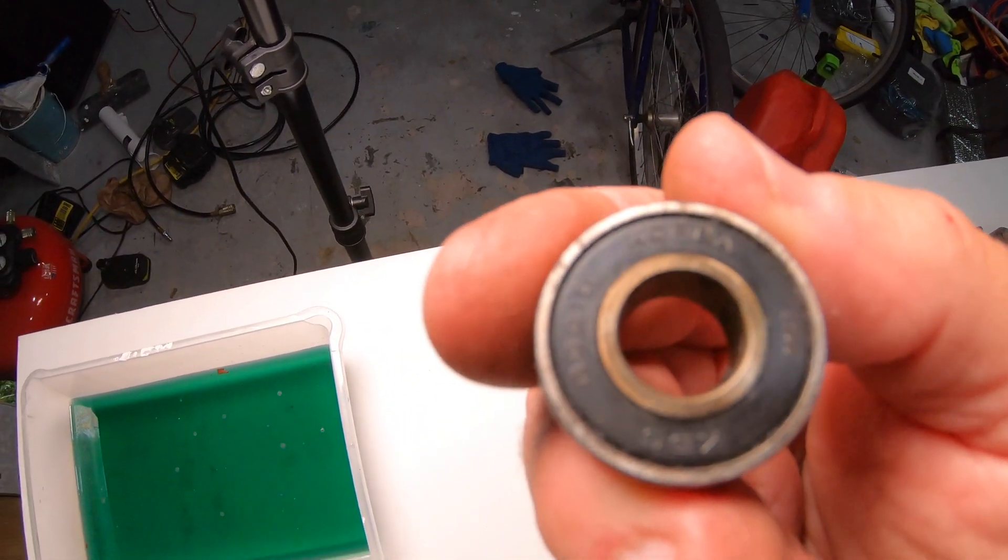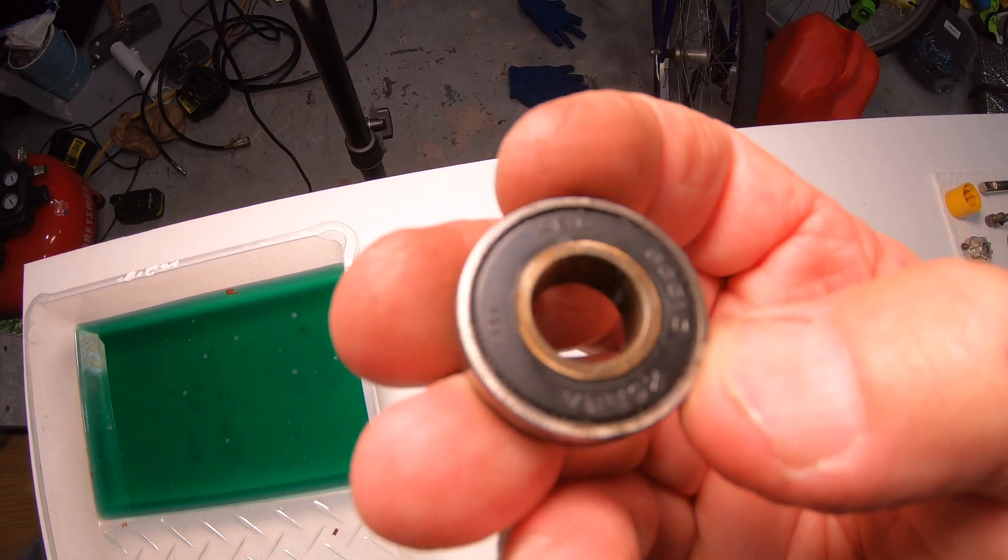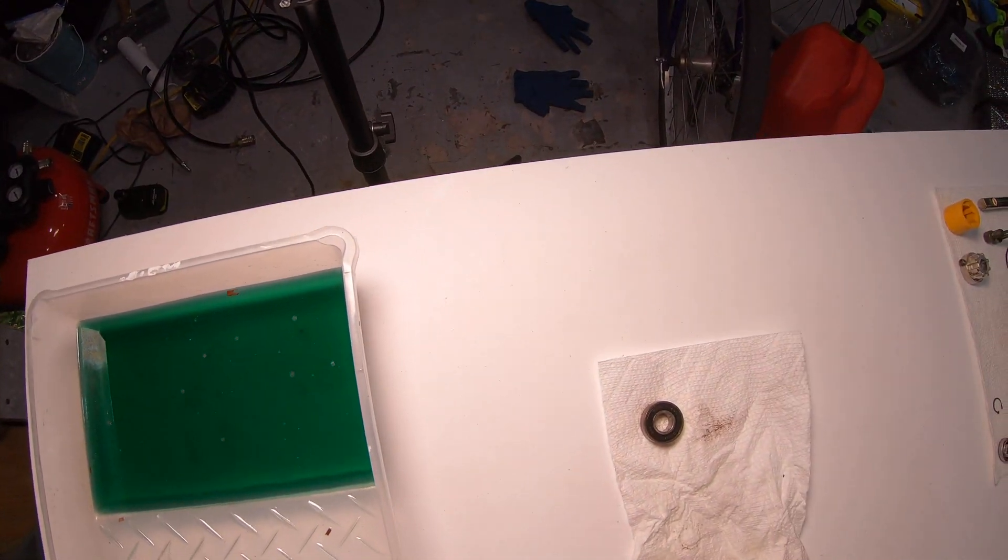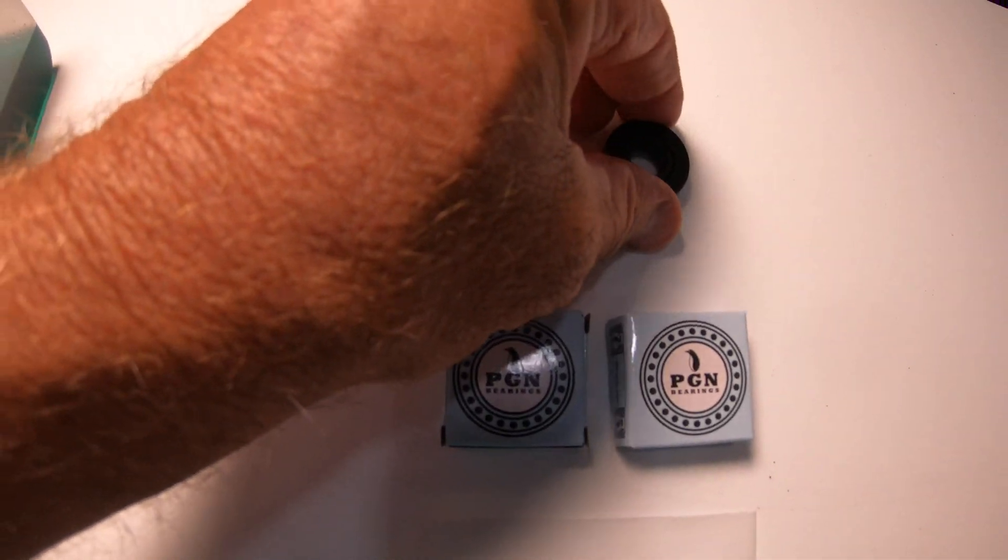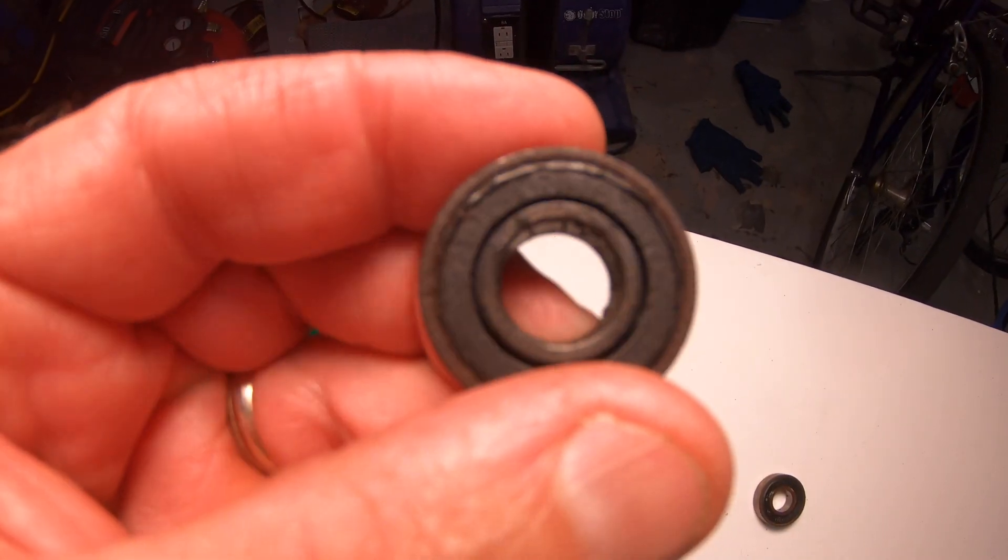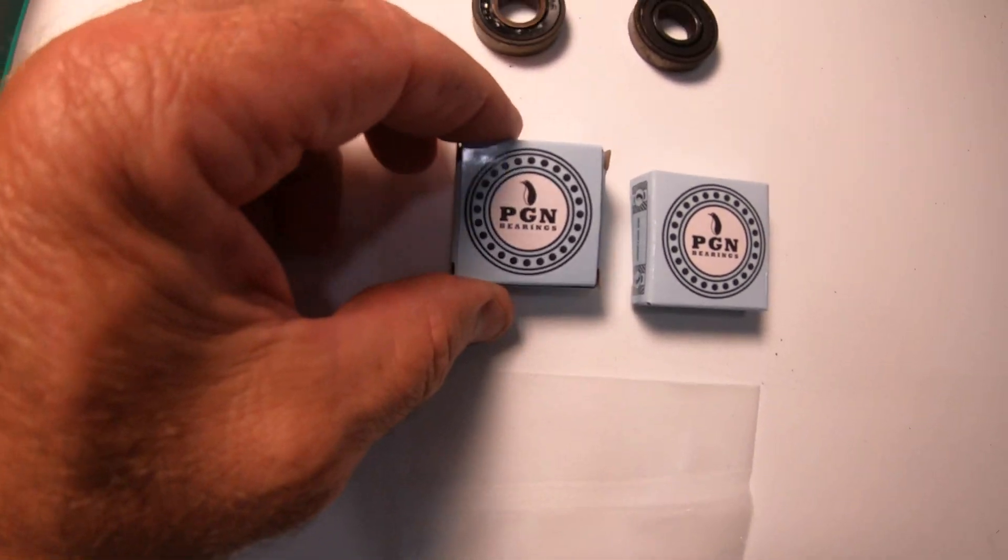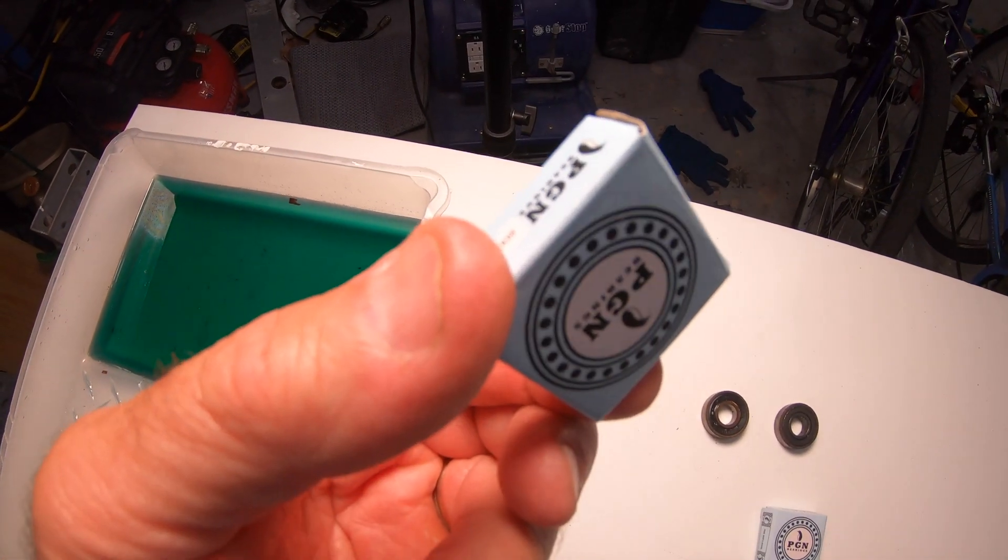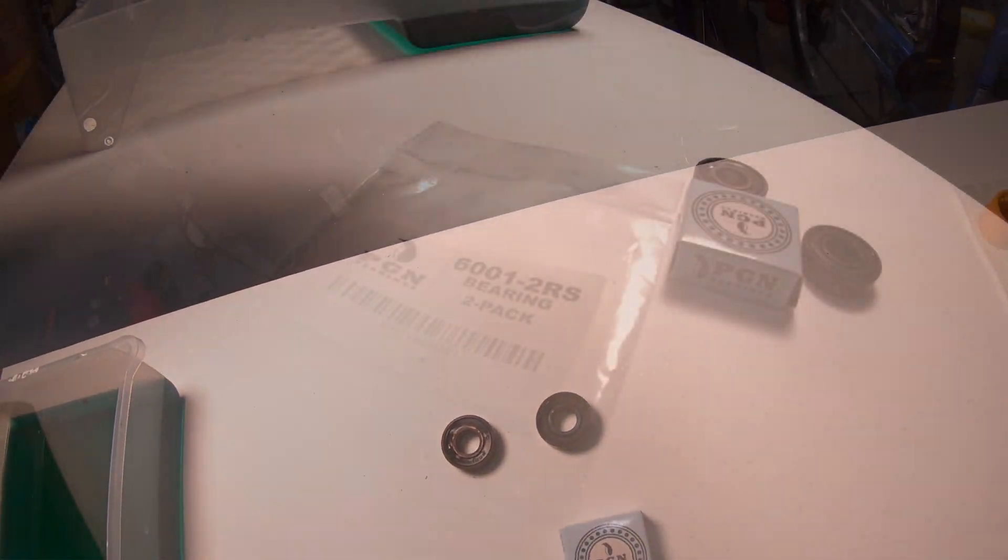I went on Amazon and I found a two-pack of bearings and they were six dollars, and I got them the next day, so I lucked out. One of them was totally seized up and the pump wouldn't turn, but the other one still had a little bit of life in it. But these are now a 6001 RS, which just means rubber seal, and like I said, they were six bucks on Amazon.